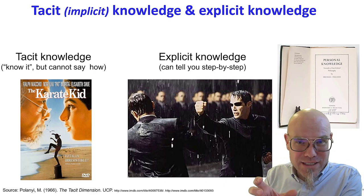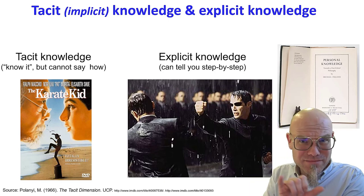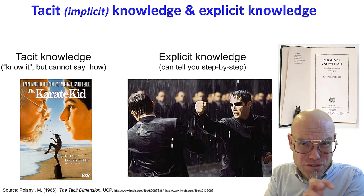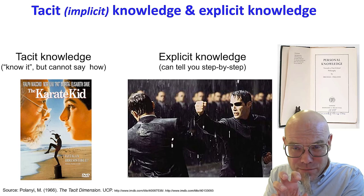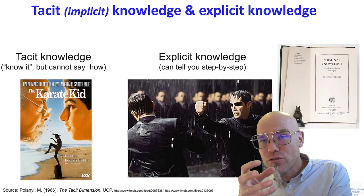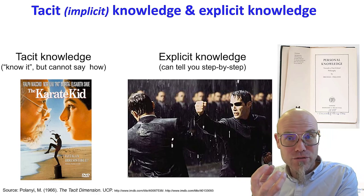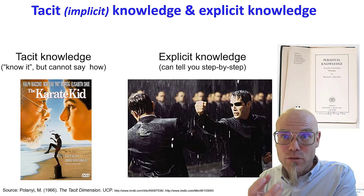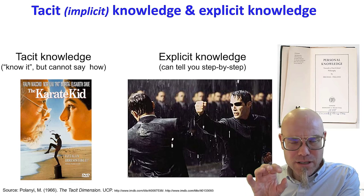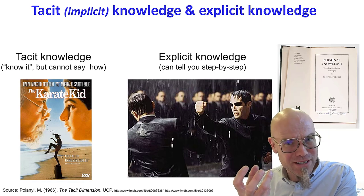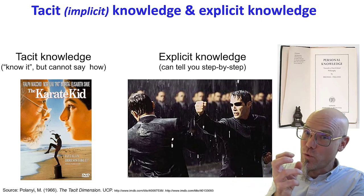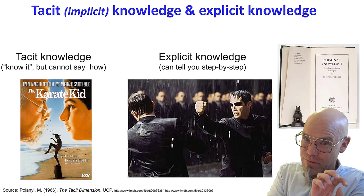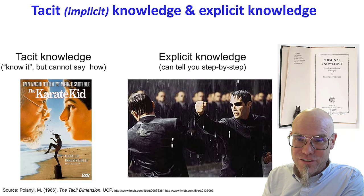So what we often do with algorithms — the algorithmization game — is we have some kind of process, we don't know what's going on, but we try to figure out step-by-step what it is in order to convert it into algorithmic form. Then we can code it up, we can write it up. Some modern neural nets, transformer networks, they do something and we don't really know what it is. The challenge is we have to figure out the step-by-step recipe of what they're doing.